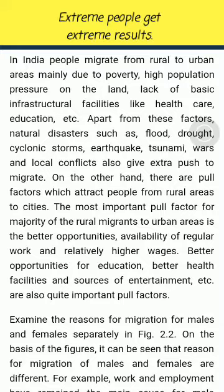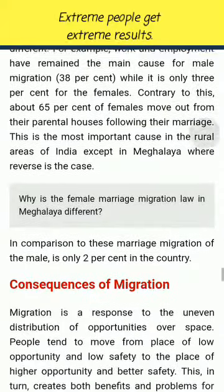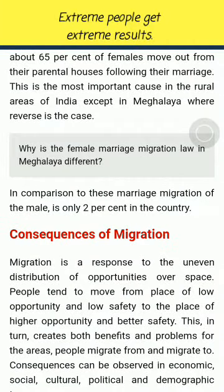On the basis of the figures, it can be seen that reasons for migration of males and females are different. Work and employment have remained the main cause for male migration (38%), while it is only 3% for females. Contrary to this, about 65% of females move out from their parental houses following marriage — the most important cause in rural areas of India, except in Meghalaya where the reverse is the case. Marriage migration of males is only 2% in the country.